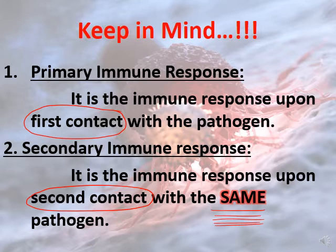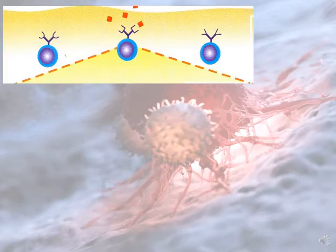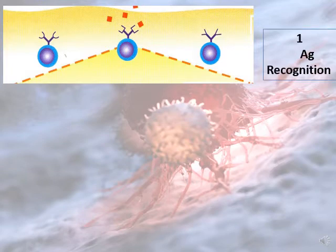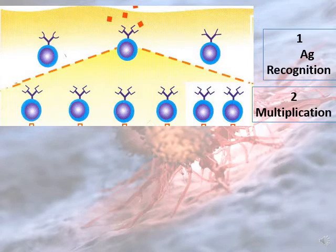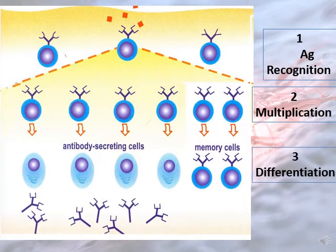The immune response involves three steps. First, we have the recognition of the antigen. Second, we have multiplication — also called amplification or proliferation — which is the increase in the number of immune cells. Third, we have differentiation.